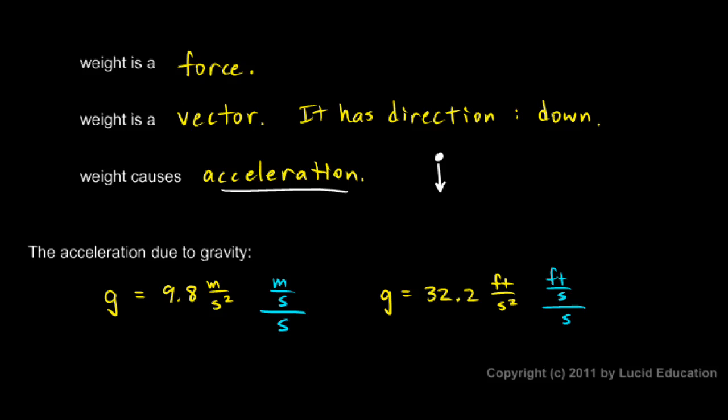And this is the same for every object. If you drop anything, it doesn't matter if you drop a little tiny rock or a grand piano, it's going to accelerate down that fast. These numbers are the numbers that are the case for gravity near the Earth's surface.